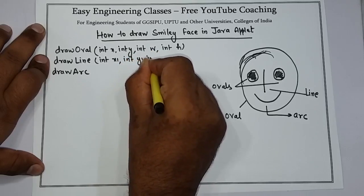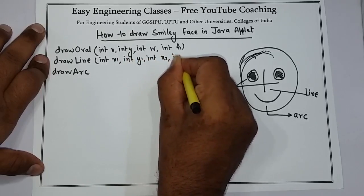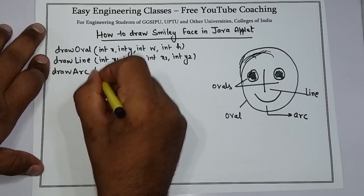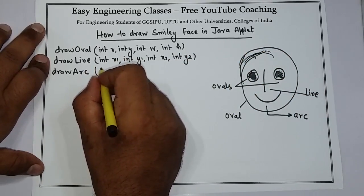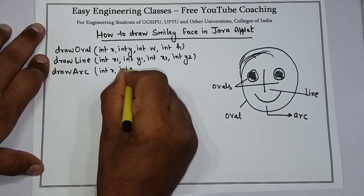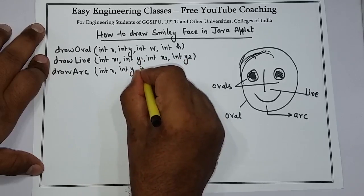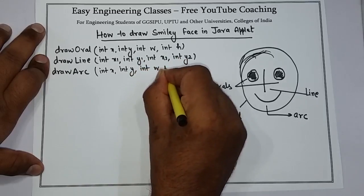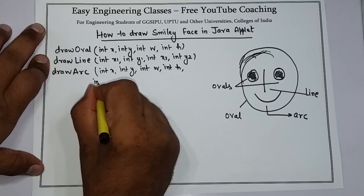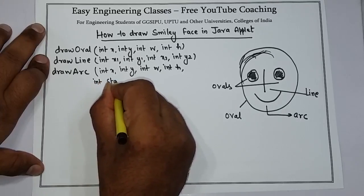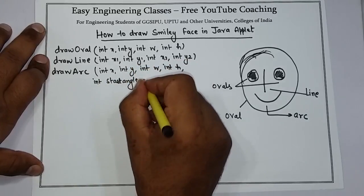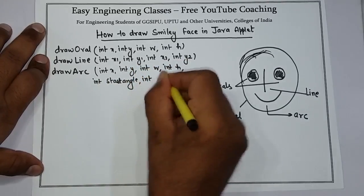For drawArc, the arguments are: int x, int y, then width, height, and two more - one is start angle and the next is arc angle.